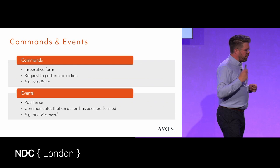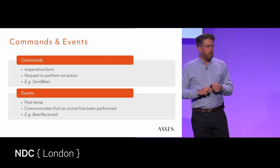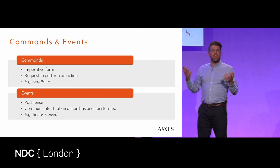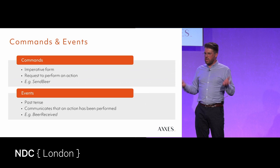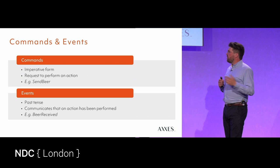Commands and events are interesting. A command is something you can send into the system in imperative form — it is a request to perform a certain operation, written imperatively. For instance, 'send beer' would be a good command. An event is a notification that something has happened in the system. It has already taken place — there's nothing you can do to change it, but you can act on that information. Events are written in the past tense, for instance, 'beer received'.